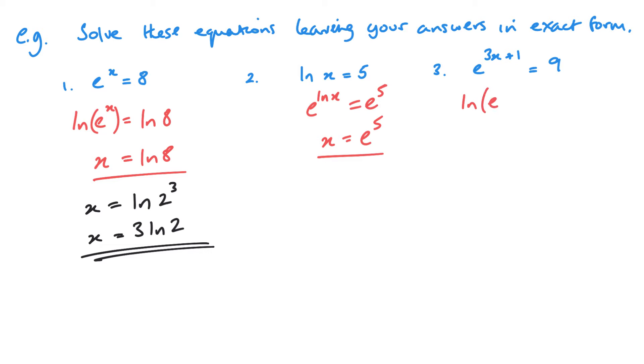On this one, ln e to the 3x plus 1 equals ln 9. That means 3x plus 1 equals ln 9. 3x equals minus 1 plus ln 9.